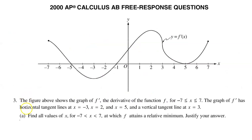Problem number 3. The figure above shows the graph of f prime, the derivative of function f, for the interval from negative 7 to positive 7. The graph of f prime has horizontal tangent lines at x equals negative 3, x equals 2, and x equals 5, and a vertical tangent at x equals 3.